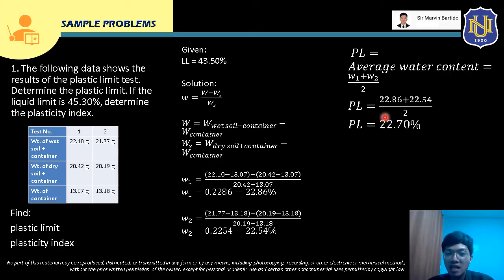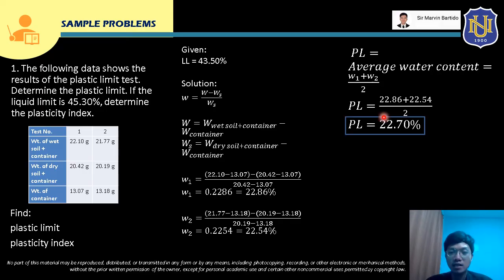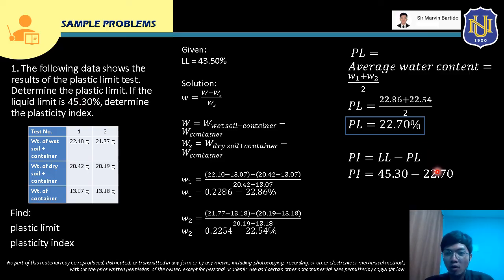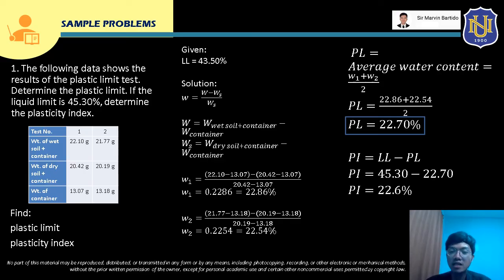To determine the plastic limit, we're just going to solve the average water content. That will just be water content sub 1 plus water content sub 2 over 2. Yung first water content natin, 22.86, and then yung second, 22.54 — i-divide lang natin sa 2. Yung plastic limit natin dyan ay 22.70%. So yan na yung sagot para sa plastic limit — that's just the average water content. Now for the plasticity index, the formula is liquid limit minus the plastic limit. So 45.30 minus 22.70 — the plasticity index is 22.60%. So these are the answers already for this problem.